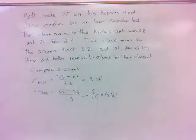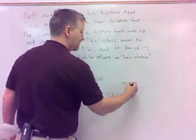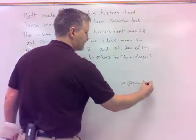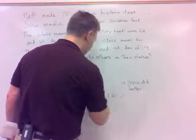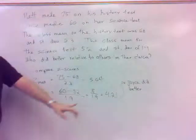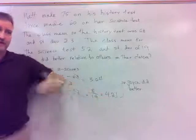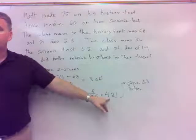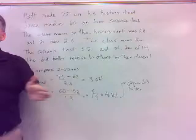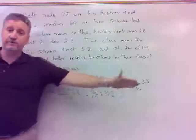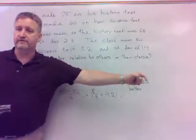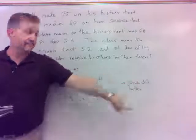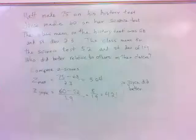So who did better, relatively speaking? Joyce did better. Higher z-score. Her score was further out standard deviation-wise than was Matt's. He was only three standard deviations away, hers was a little over four standard deviations away. Here's the mean, Matt's here, Joyce is here. So that puts her further out.